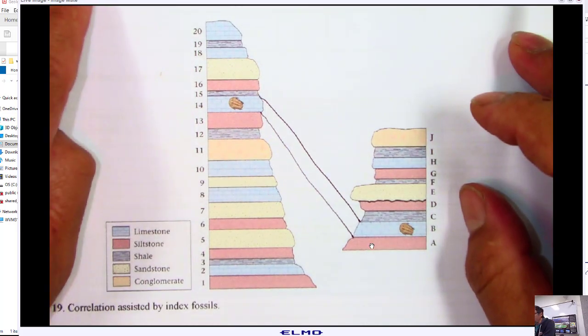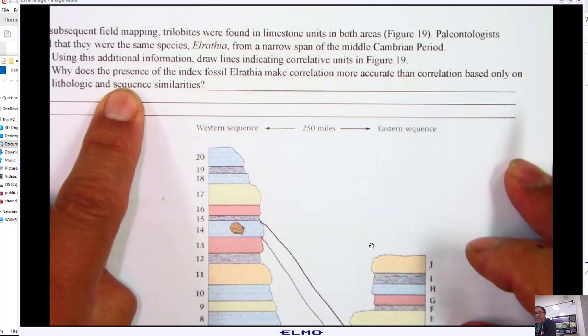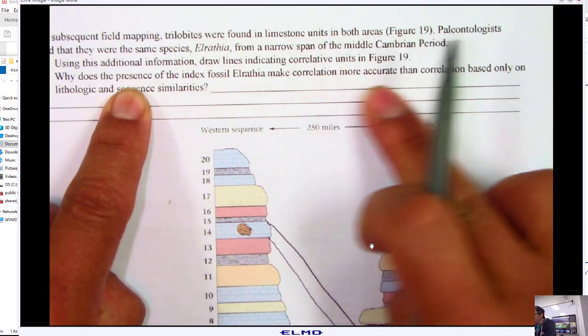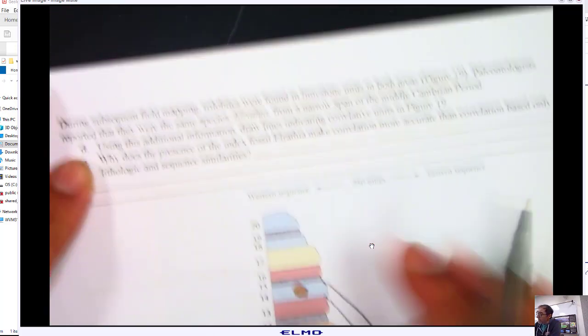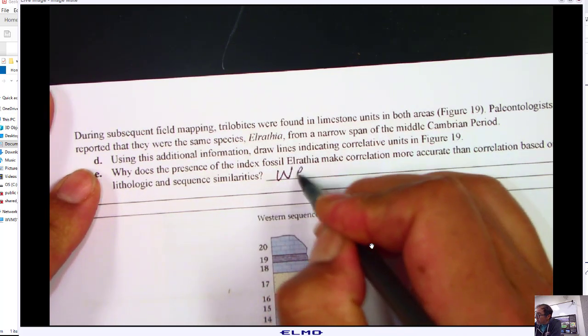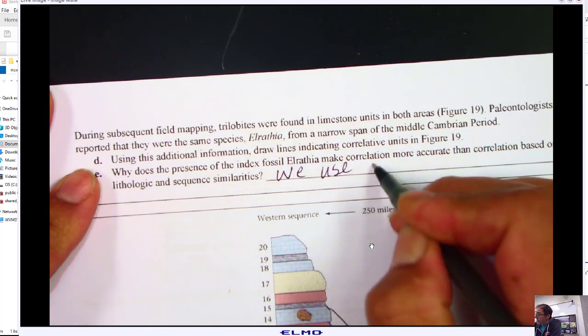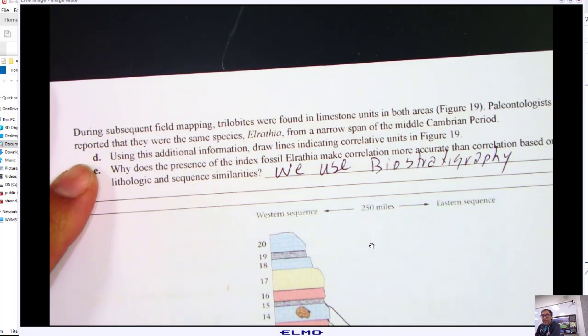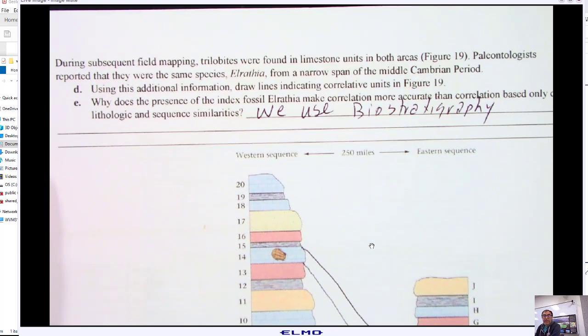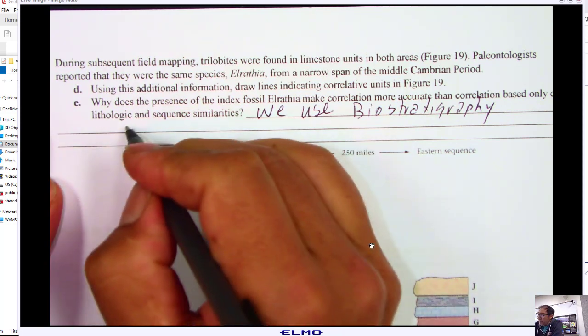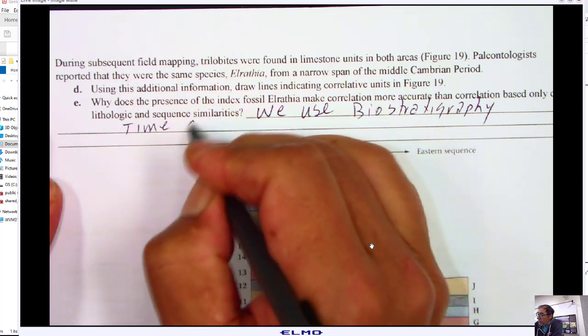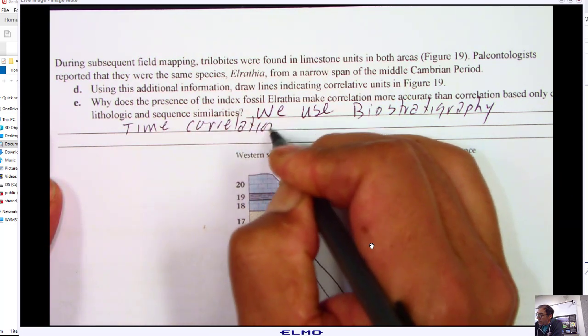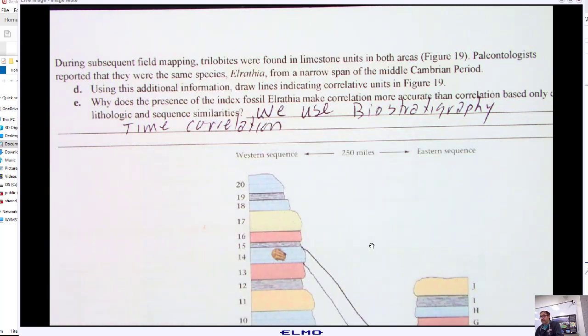We'll take the top of this limestone in the eastern sequence and correlate with the top of that limestone in the western sequence. This is a time boundary. We see that our conglomerates are totally different ages, so we were totally wrong in that previous exercise. But now we know. Why does the presence of index fossil Arathia make correlation more accurate? The thing is, we use biostratigraphy. That would be more accurate for comparing times. We have a time correlation, rather than something that's maybe time transgressive.